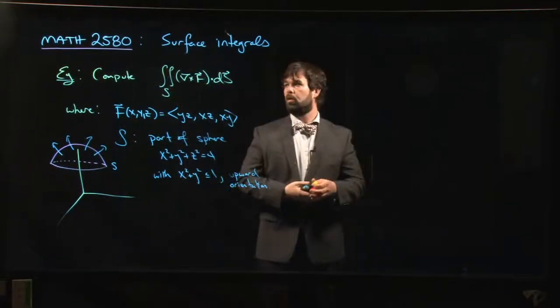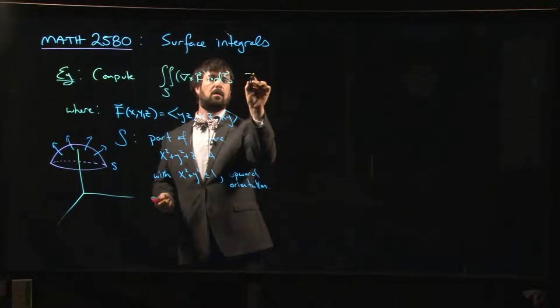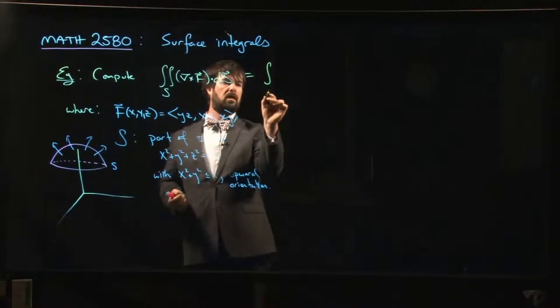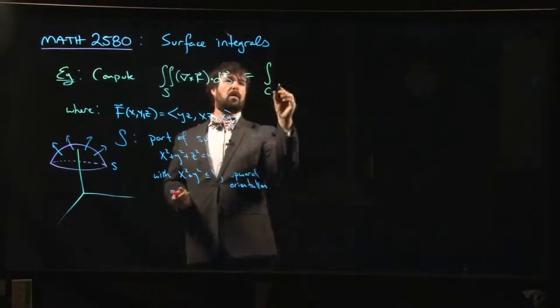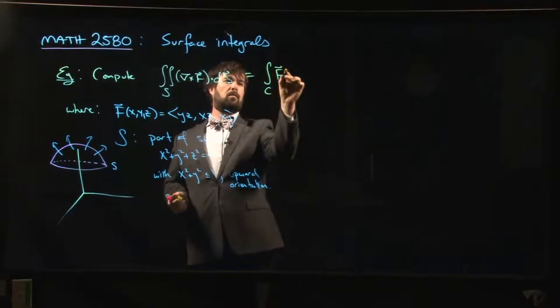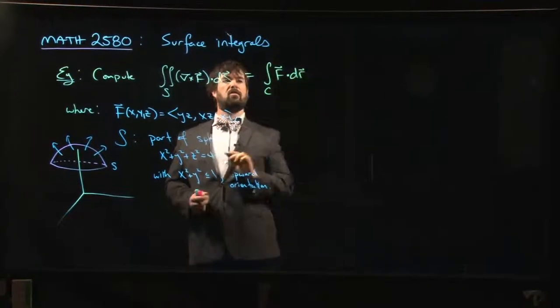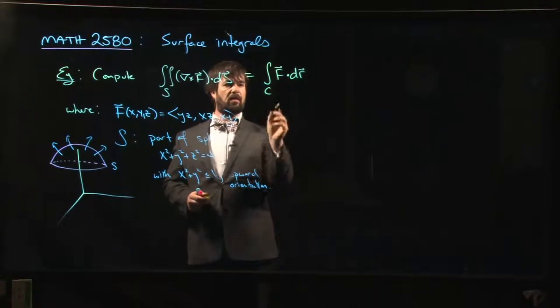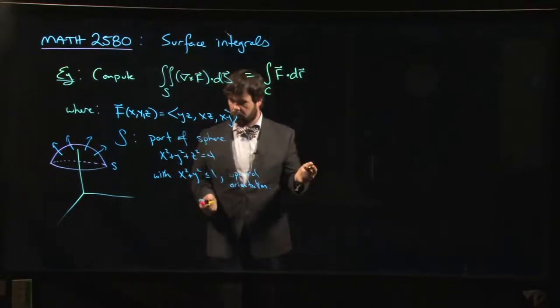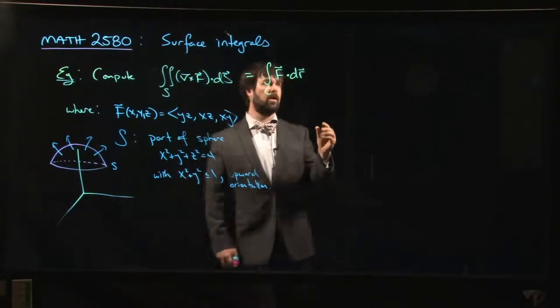We know that Stokes Theorem will guarantee us that we can compute this by computing the integral of our original vector field f around the curve C. So what is that curve C? What is the boundary?